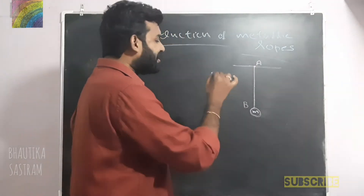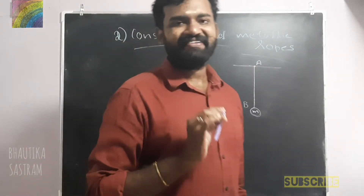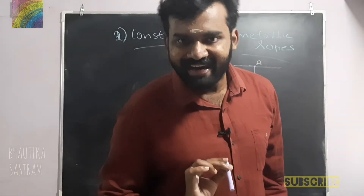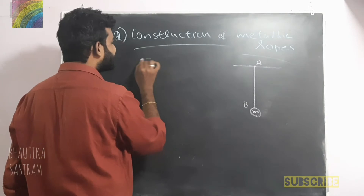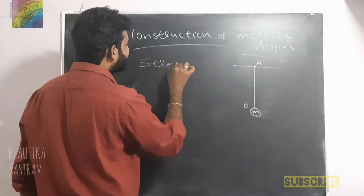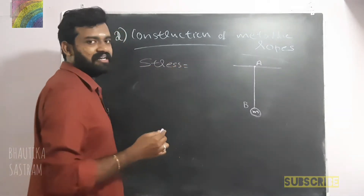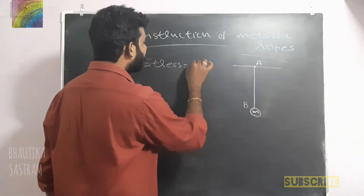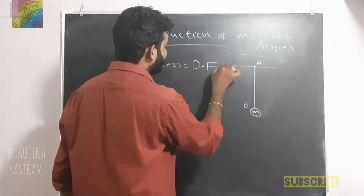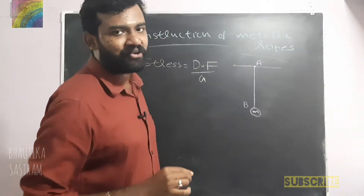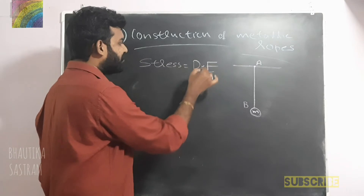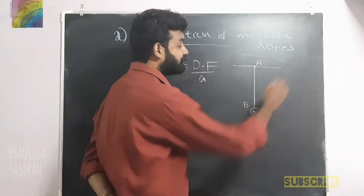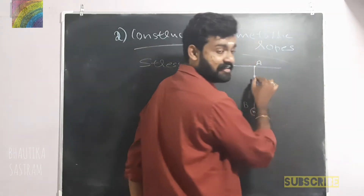We have to write deformation. You don't have to write stress separately — if you come to stress, we write restoring force divided by area, and it is deforming force divided by area. So stress is equal to deforming force divided by area. The metallic wire has a cylindrical shape.